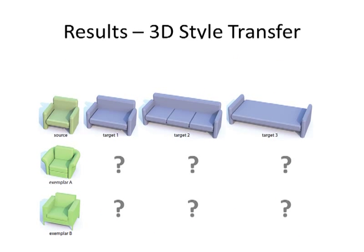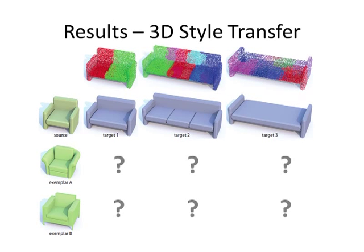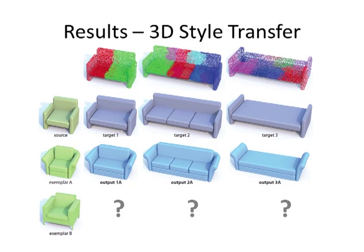Now we show several 3D results. The first example is style transfer on a set of soft furniture. Here we have 3 target models in the same style as the source armchair, and 2 exemplar models with different styles. The top row shows the optimized source to target analogy modes. These are the output models using our algorithm.